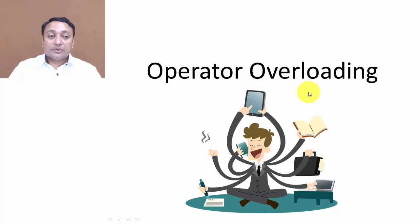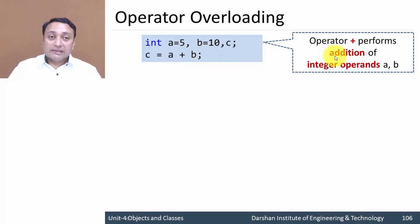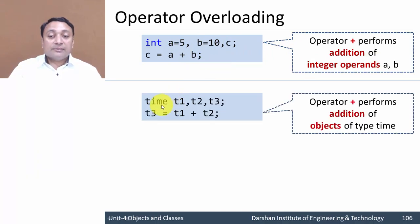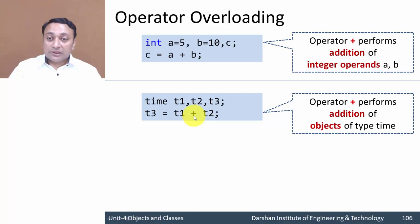Let us understand the concept of operator overloading. Here we have the operator plus and two operands of type integer. Whenever the compiler detects this plus operator with integer or float operands, it will perform addition — no additional instruction is needed. But here I have three objects of type time, and I am performing addition of t1 and t2, storing the answer into t3. These three are objects, or user-defined data types. The compiler will get confused when you write this statement because there are no instructions to perform addition of user-defined data types. So if we want to use this plus operator to perform addition of objects, we can use the operator overloading concept.